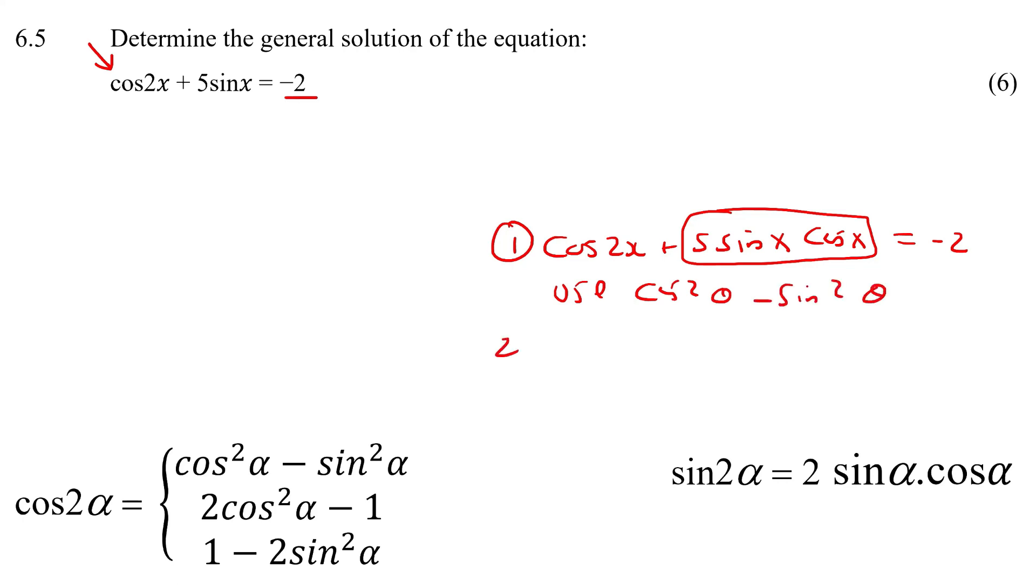Now if we instead have something like cos 2x plus 5 cos x equals minus 2, this is also going to become a trinomial. But now because this is only a cos, I would use the one that only has a cos. So I would use 2 cos squared x minus 1.